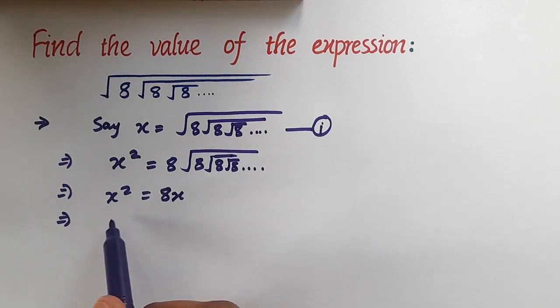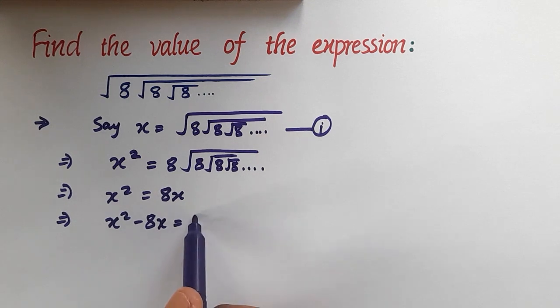On subtracting 8x on both sides, we will have x squared minus 8x is equal to 0. Now we have x common in the two terms, so let's take x common: x times x minus 8 is equal to 0.